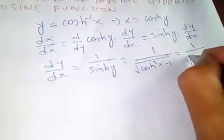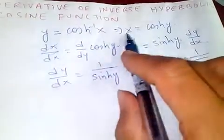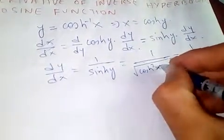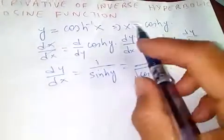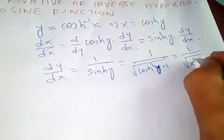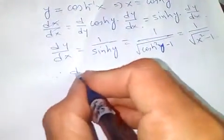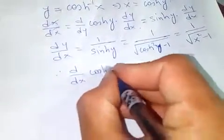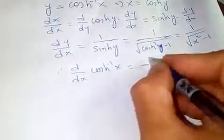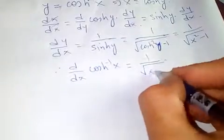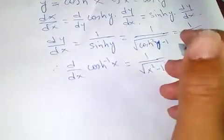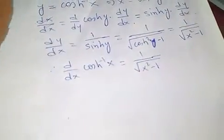So we have 1 over the square root of x² minus one. Therefore, the derivative of cosh⁻¹(x) is 1 over the square root of x² minus one.